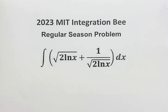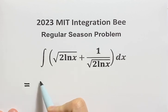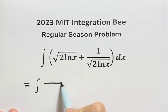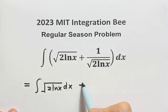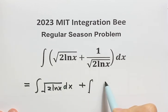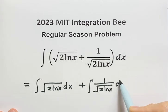In this video, we will be evaluating the integral from the 2023 MIT Integration Bee. First, let's separate the integral into two parts. The first part is square root of 2 log x, then the second part is 1 over 2 log x, then dx.